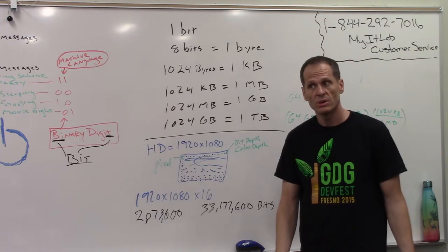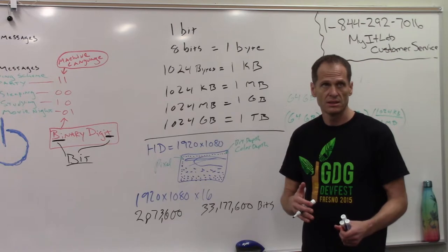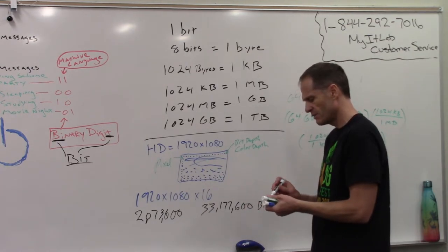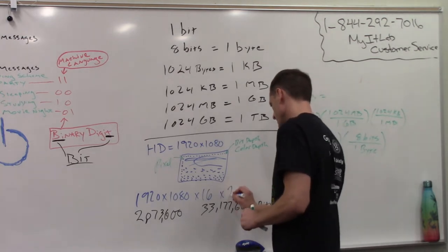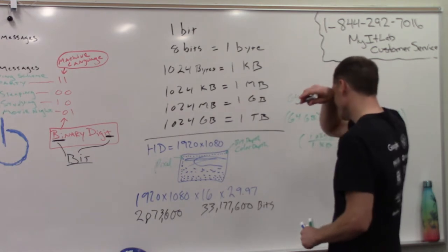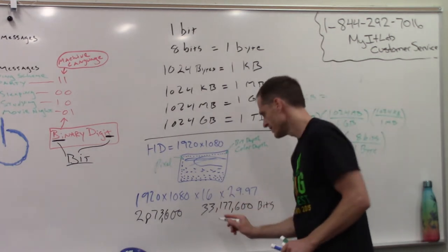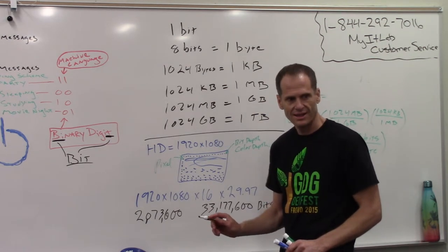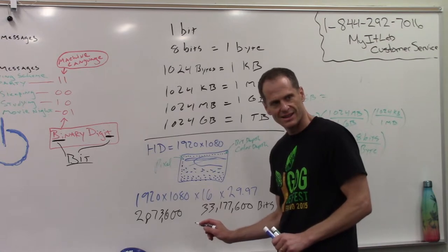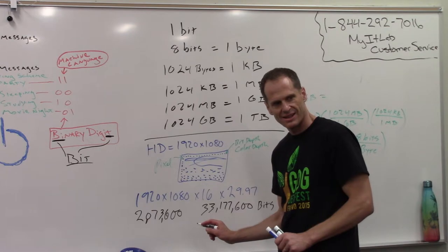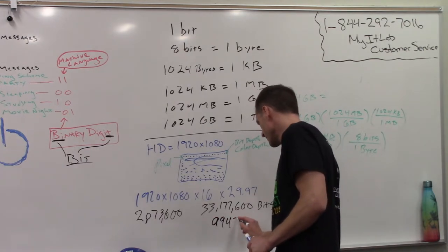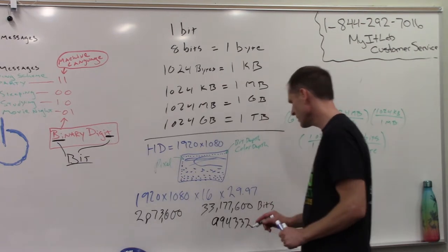In North America, we shoot NTSC, which is a video standard, which means that we're shooting at 29.97 frames per second. Multiply this number by 29.97 frames per second. That's it. 994,332,672 bits.